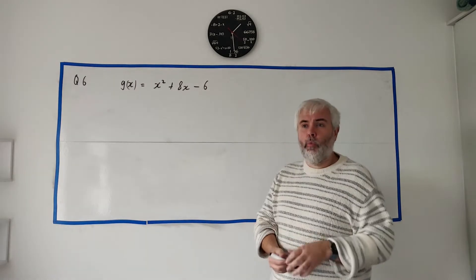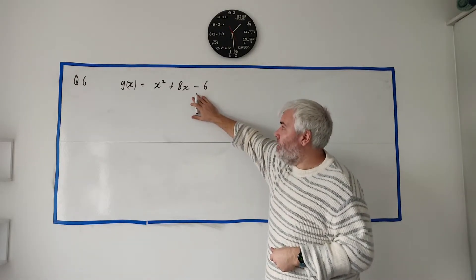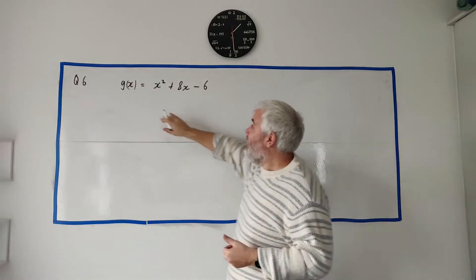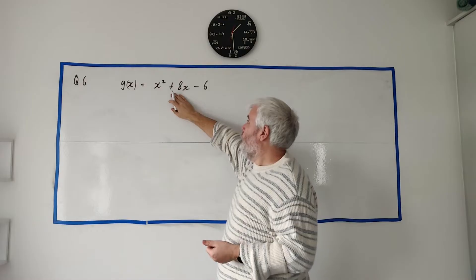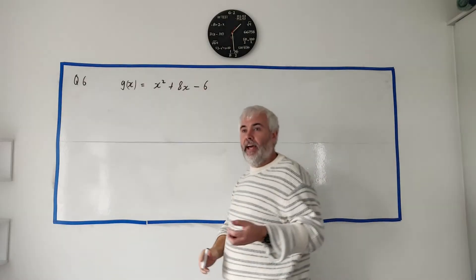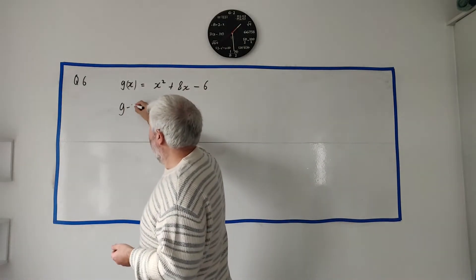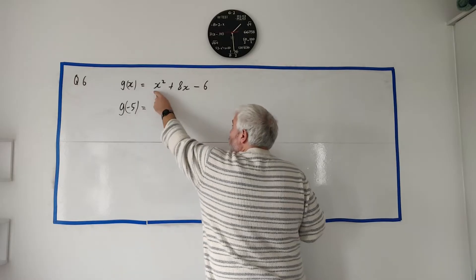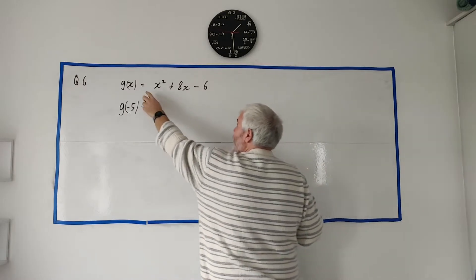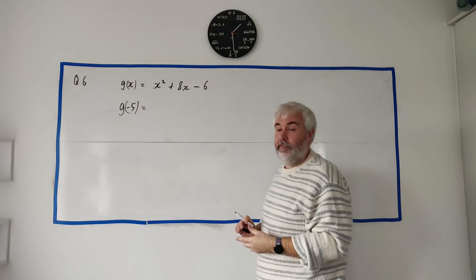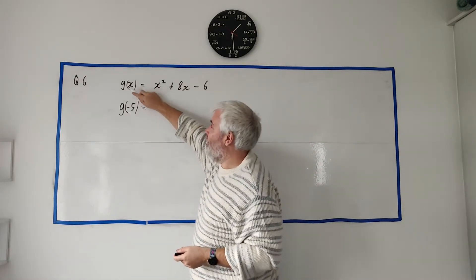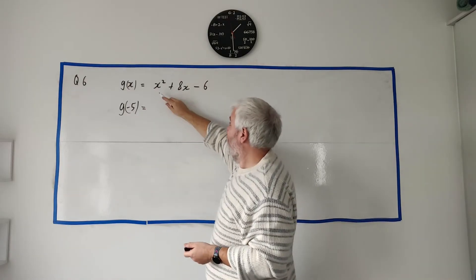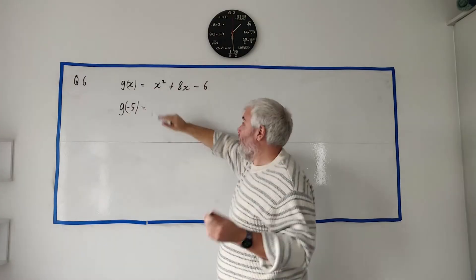Okay, to start off Part A(i), they give us this function here g(x). It won't always be f(x), it'll be g(x), h(x), different things like that. In this case g(x) is equal to x² + 8x - 6, and they ask us to find g of -5. Now g of x equals this. g of -5 also equals this. Just everywhere you see an x you now put a -5.